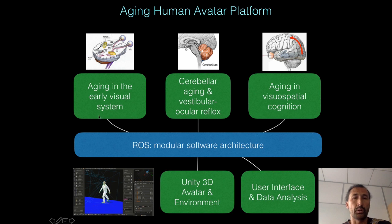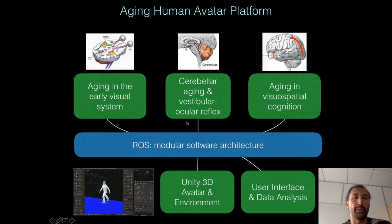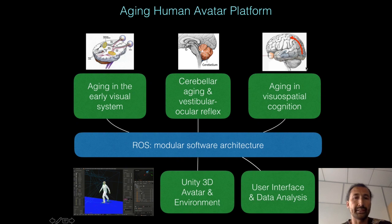The functional modules, which I will describe in detail later, currently number three: the early visual system, which includes a retina and V1 cells; a model of the cerebellum, which in its current implementation handles adaptation in the vestibulo-ocular reflex; and a third module about spatial orientation.